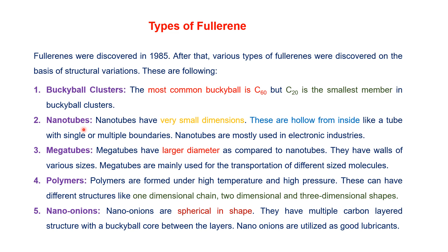Philorene nanotubes have very small dimensions. They are hollow from inside like a tube, with single wall and multiple wall boundaries, and are mostly used in the electronic industry. Megatubes have a larger diameter compared to nanotubes and have walls of various sizes. Megatubes are mainly used in transportation of different sizes of molecules.